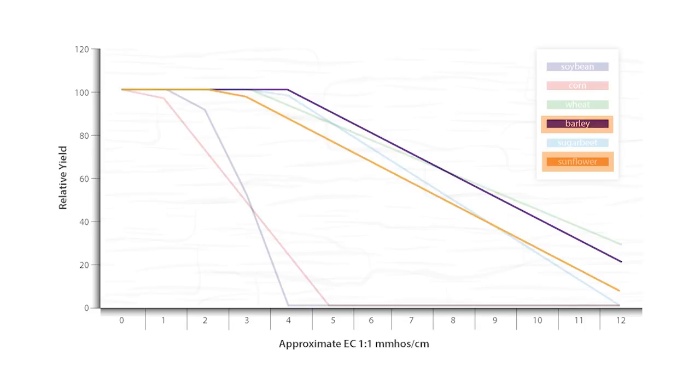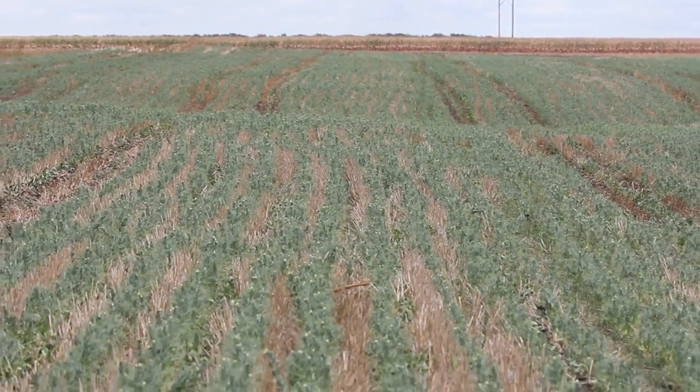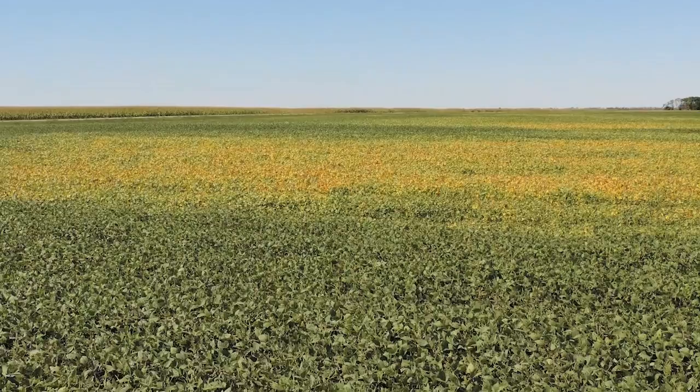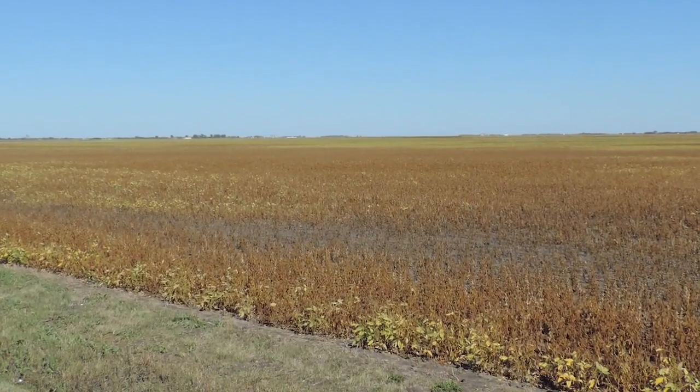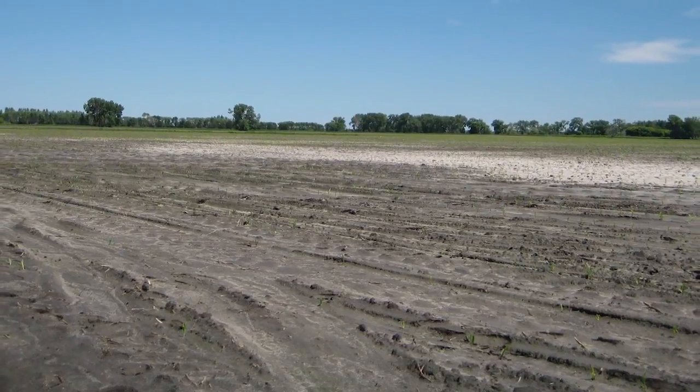So plant barley or sunflower or in some cases wheat in saline areas rather than corn or soybean. Though this increases the intensity of your management plan, if you have crop failures in these saline areas year after year, the saline areas will grow in size, so active management is critical.